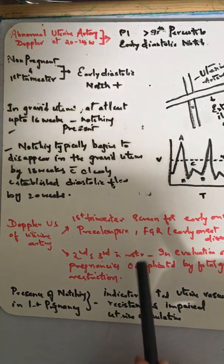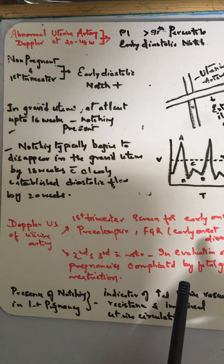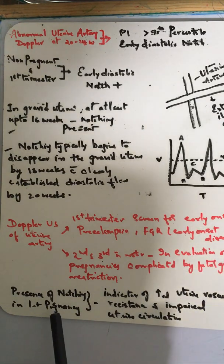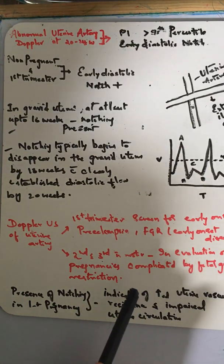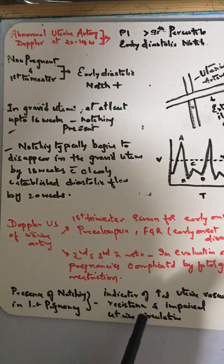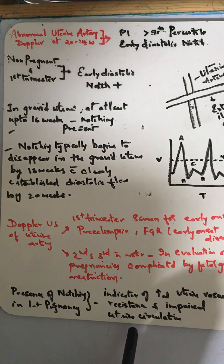In the second and third trimester, it's for evaluation of pregnancies complicated by fetal growth restriction. In late pregnancy, if there is a diastolic notch, decreased end-diastolic flow, and increased PI, it is an indicator of increased uterine vascular resistance and impaired uterine circulation.